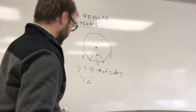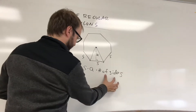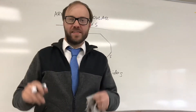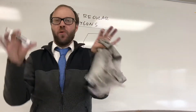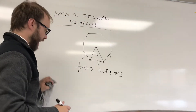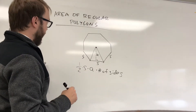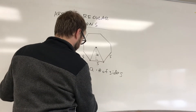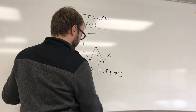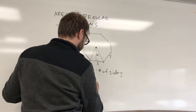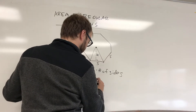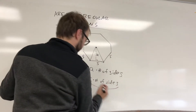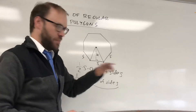I'm going to move the formula around a little bit. Notice that all these terms are being multiplied. The commutative property says if I'm multiplying things, I can change the order and get equivalent expressions. So I'm going to take one-half, the apothem, and then multiply by the side length, and then multiply by the number of sides. I want you to look at the side length times the number of sides.